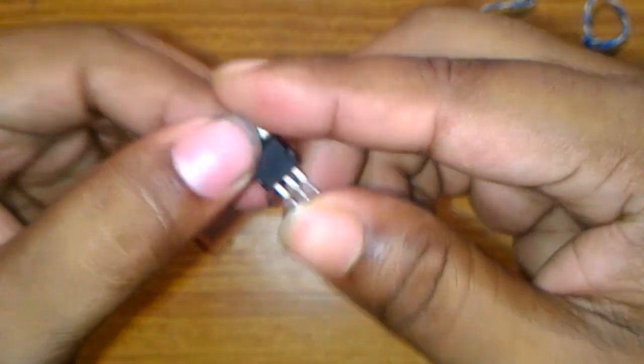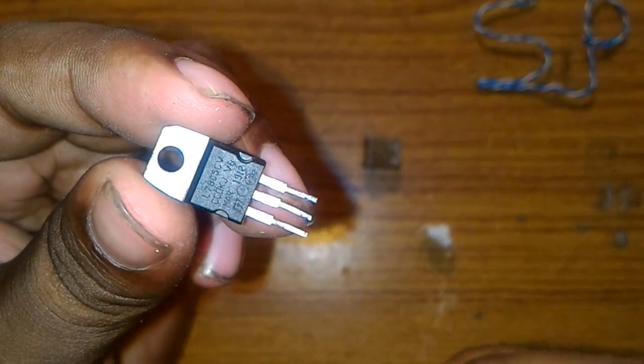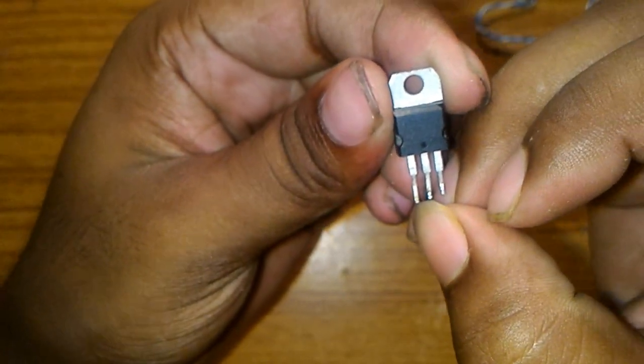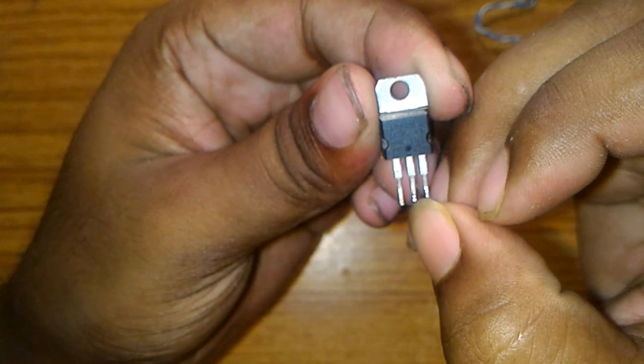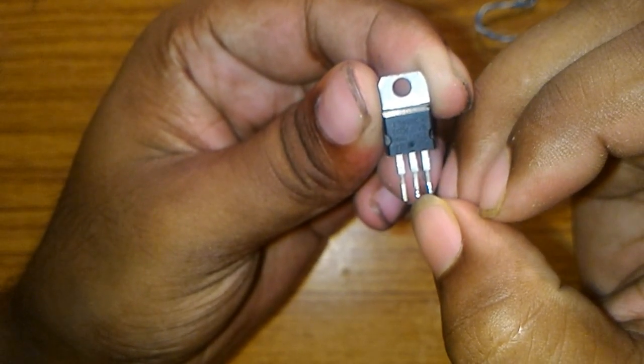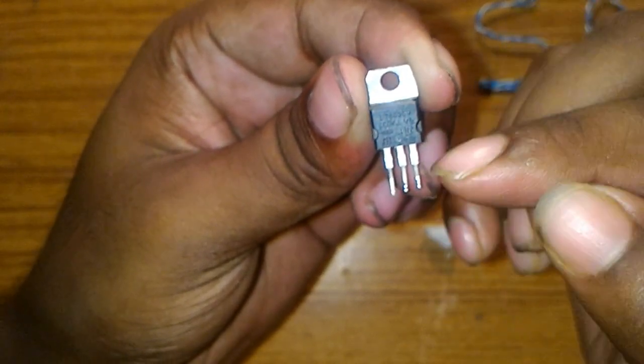Now about this voltage regulator, the LM7805. The first pin is our input pin, then this is our ground pin - this is common ground to both input and output. This side pin is our output pin.